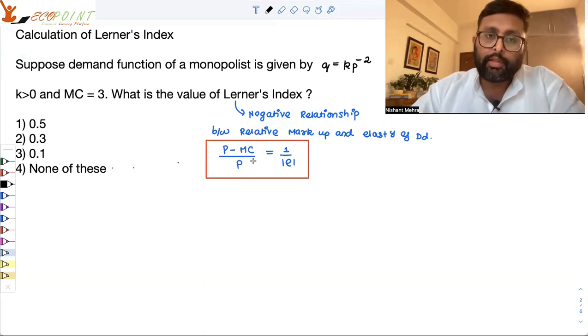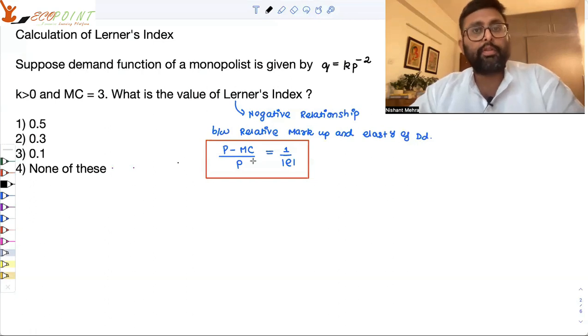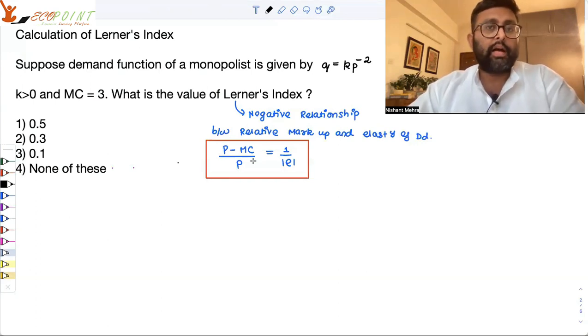The power which he has to set up the price above the marginal cost is given by p minus MC. And the relationship of this power with elasticity of demand is negative. Agar jada substitutes available hongi toh woh jada price ko upar nahi set kar sakta hai. Agar aapki demand urgent hai, agar kam substitutes available hai, toh elasticity of demand bhi kam hai. And if elasticity of demand is less, your power to set the price above the marginal cost increases. So this is the measure of market power which he has.